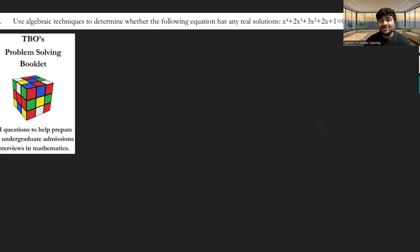Today I've got another interesting problem from TVO's Problem Solving Booklet. It contains a bunch of problems ideal for students preparing for Oxford and Cambridge maths interviews. Here's the one we're solving today: use algebraic techniques to determine whether the following equation has any real solutions. It's x to the 4 plus 2x cubed plus 3x squared plus 2x plus 1 equals 0.